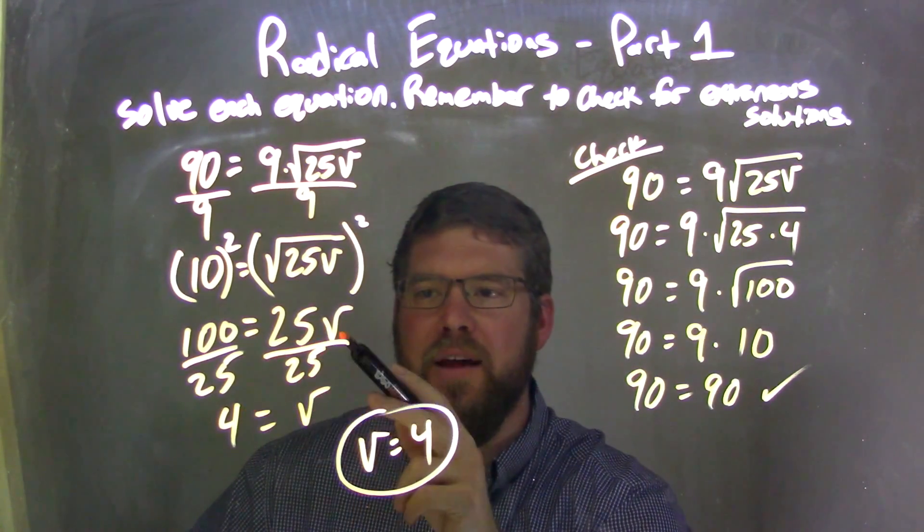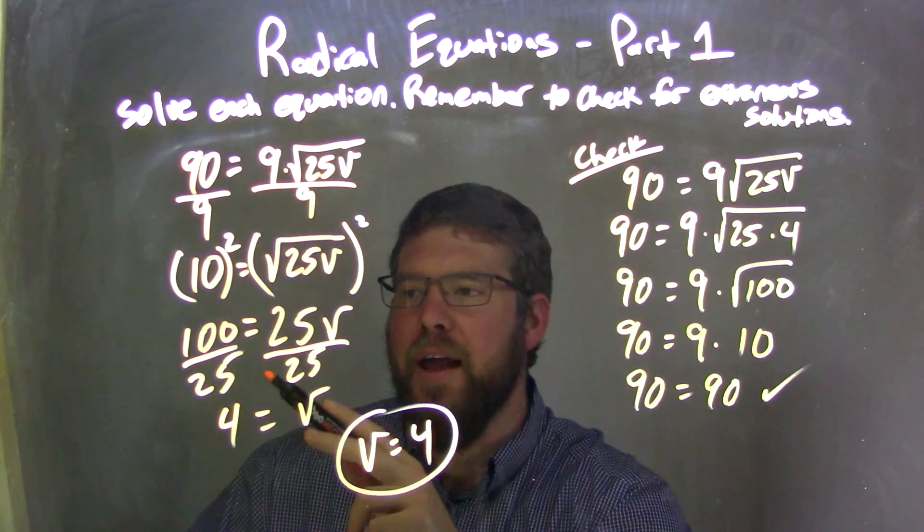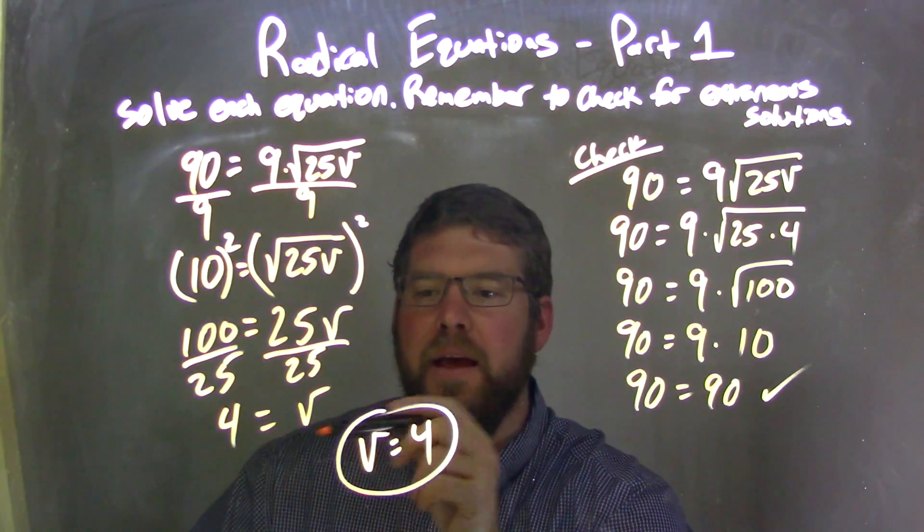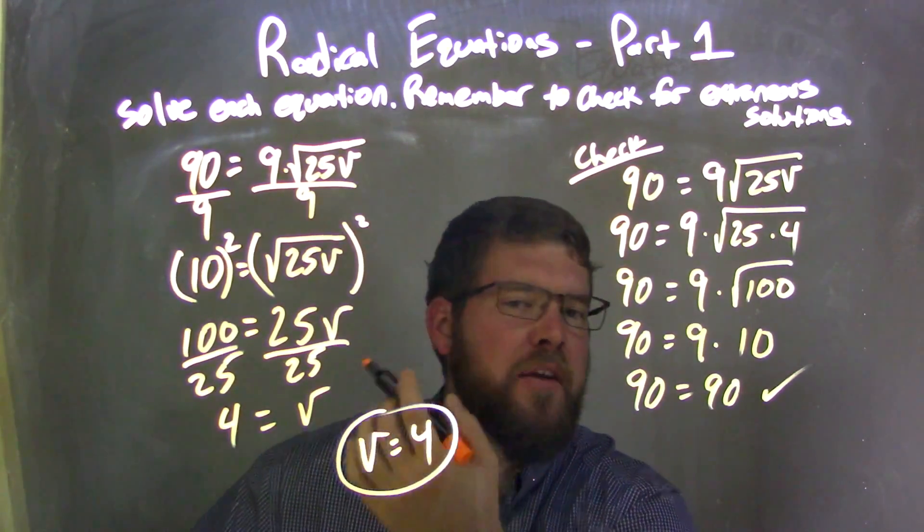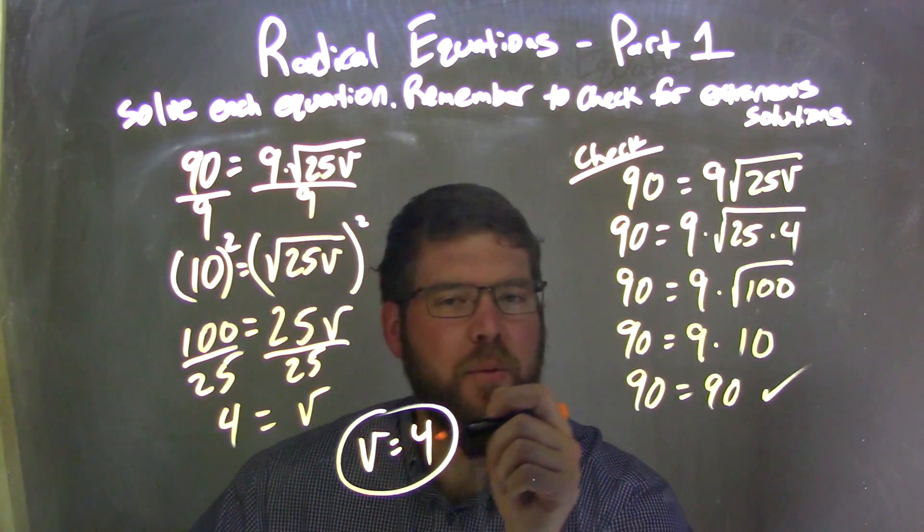Divided by 25 on both sides, giving me V by itself. 100 divided by 25 is 4. So I rewrote it to have it look nicer with V first. So V equals 4.